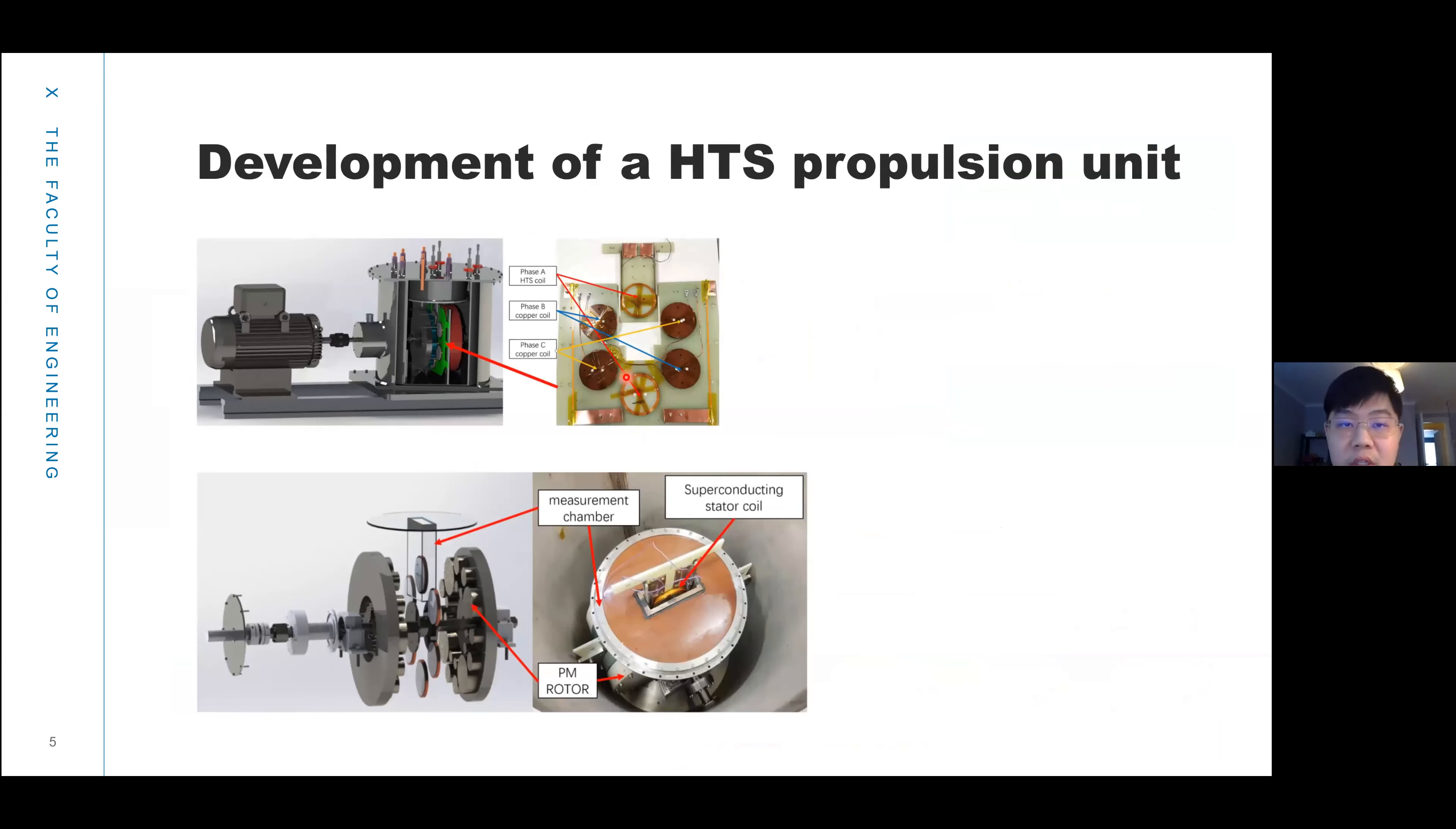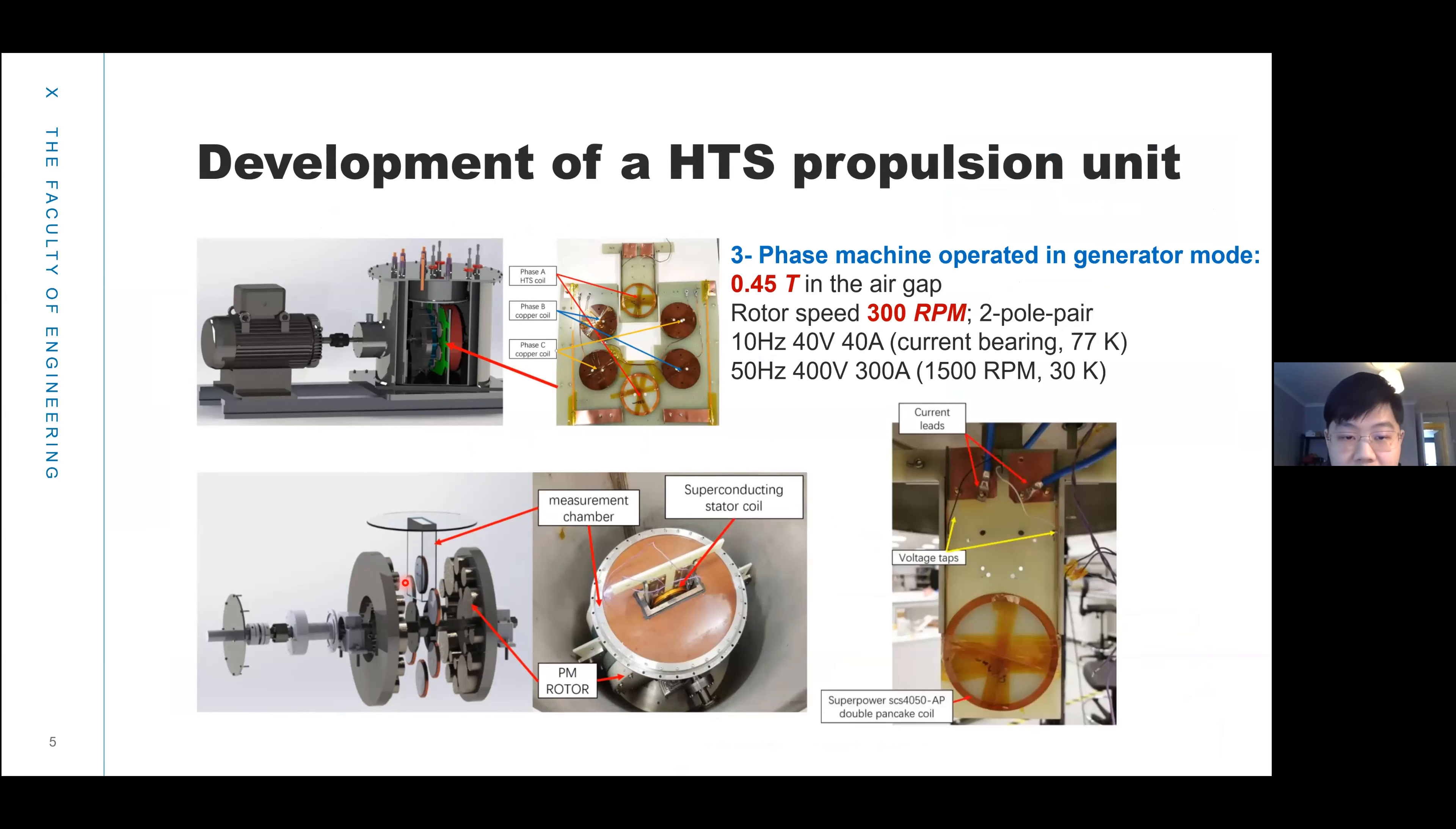We have developed an HTS propulsion unit using a calorimetric method. In this figure, we have prepared a three-phase stator and a two-pole pair rotor. This is the axial flux rotor able to run at 300 RPM. Because the bearing has a limit, we cannot go to higher rotor speed. In the future, we have to design a new bearing for 1500 RPM.